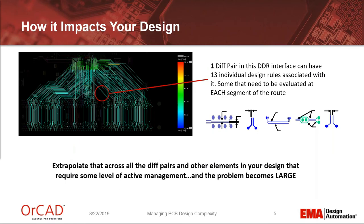So how do these affect your design? Here's one example: one differential pair in a DDR interface can have 13 individual design rules associated with it — and those are just physical and spacing constraints. If there are 64 of those in a design, that's 832 design rules that you're having to manage. You can't manage those with properties. As those constraints explode, there's no way to manage that — no one person can manage that.